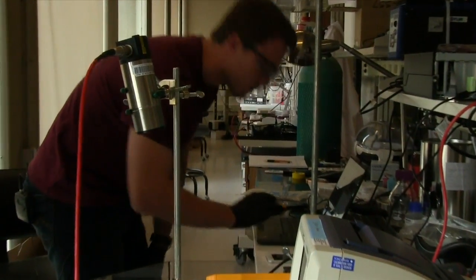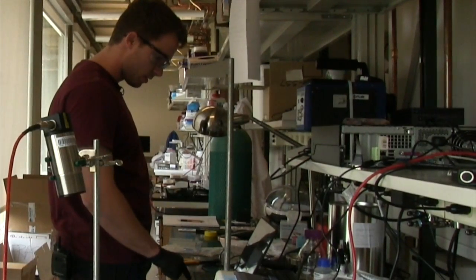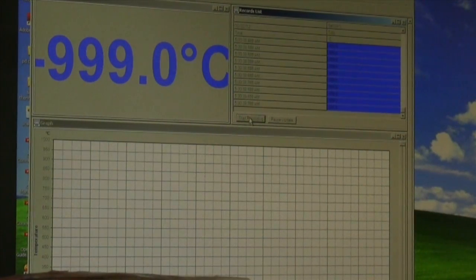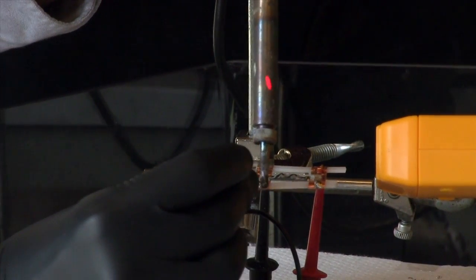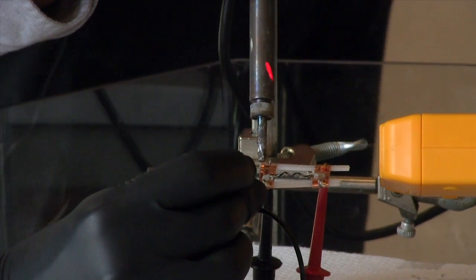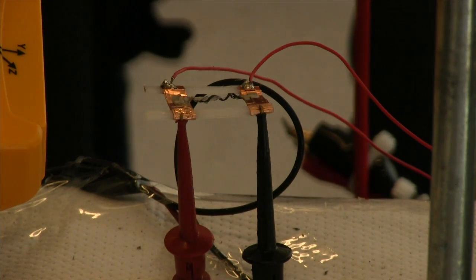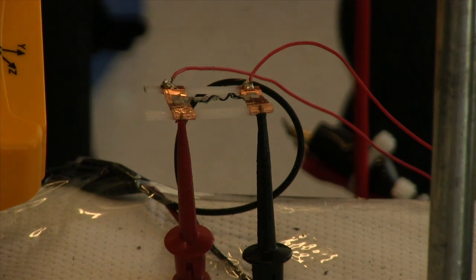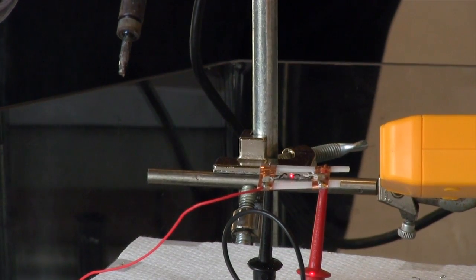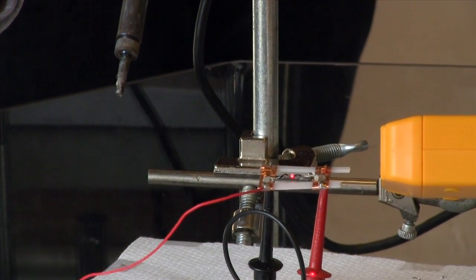Now basically we're just getting all of our instruments ready to collect some of the data. We have this magnetic field meter here connected to our PC. We have a PC interface system set up where basically when we click go, it starts recording all of the magnetic field readings it gets.